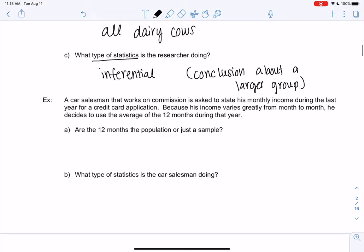So a car salesman works on commission and wants to state his monthly income during the last year for a credit card application. So his income varies greatly month to month. When you earn commission, you might do really well one month and not so much the next month. So he decides to use the average of the 12 months. So are the 12 months the population or just a sample?